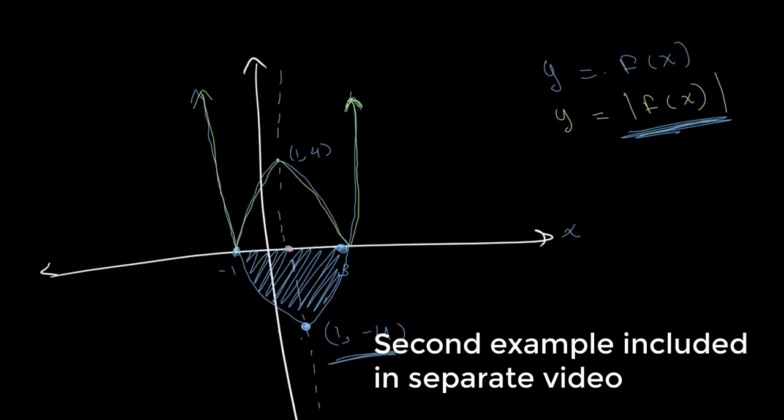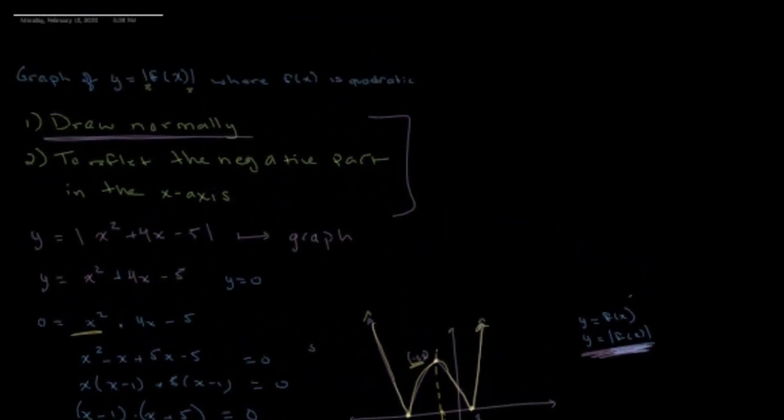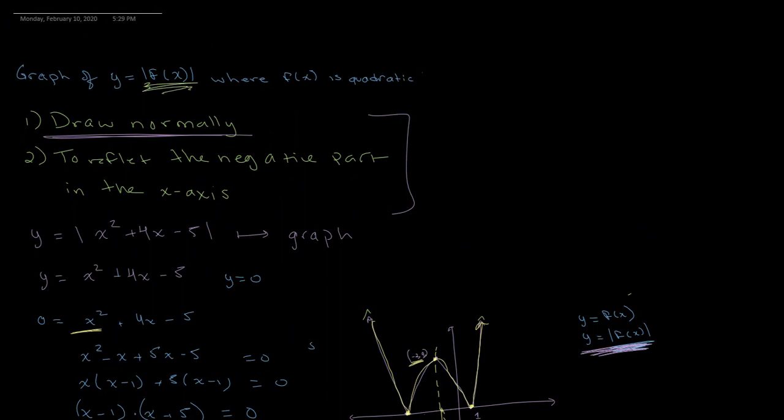So just to recap, when you want to solve for the absolute value of f of x, where f of x is a quadratic equation, you first draw it normally, then you reflect the negative part of the graph in the x-axis.